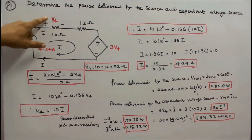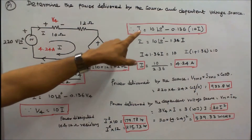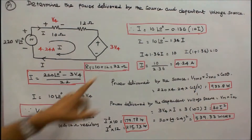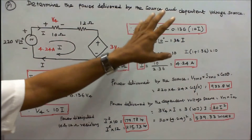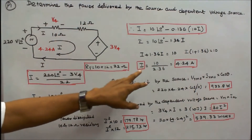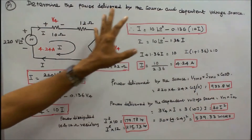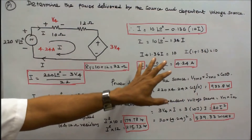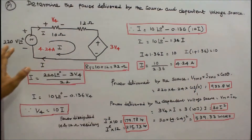Since V4 is equal to 10 times I, I can write I equals 10 angle 0 minus 1.36 I. Solving for I gives I equals 10 divided by 2.36, which equals 4.24 amps.